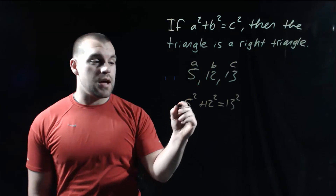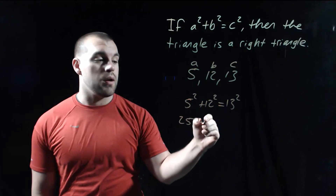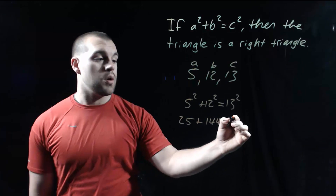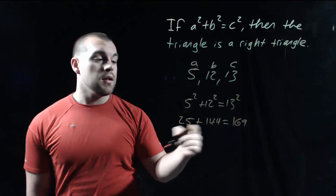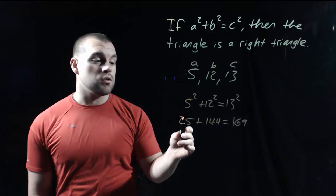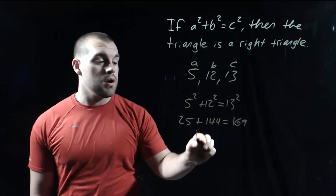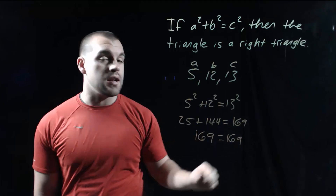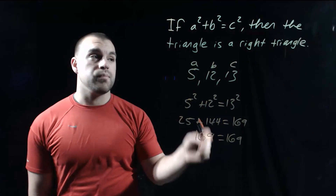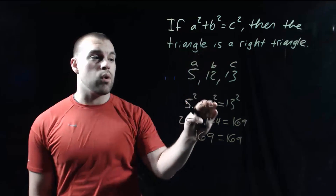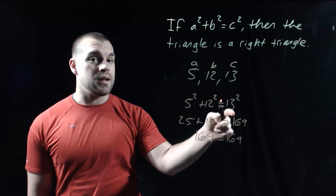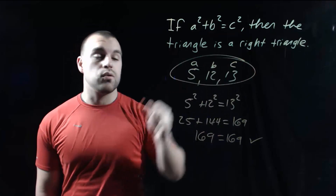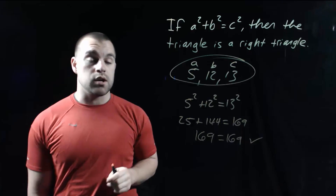On the left-hand side, 5 squared is 25 plus 12 squared is 144, and this equals 13 squared, which is 169. If we add those together, 25 plus 144 is 169. Right-hand side is 169. These two values match up, which means the Pythagorean Theorem worked. A squared plus B squared did in fact equal C squared. So that means yes, 5, 12, 13 has to be a right triangle.